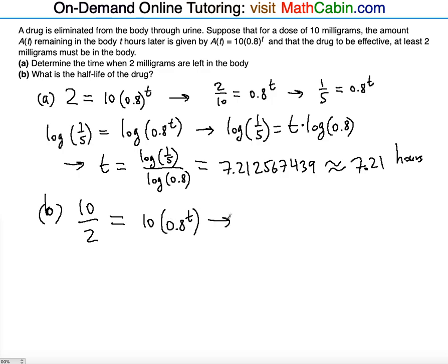So now we know that 10 divided by 2 is 5. That's going to be equal to this. Then we're going to divide by 10 again. So 5 over 10 is 0.8^T. 5 over 10 is one half. So one half is equal to 0.8^T. And again, we're going to use logarithms. Take logarithms on both sides.